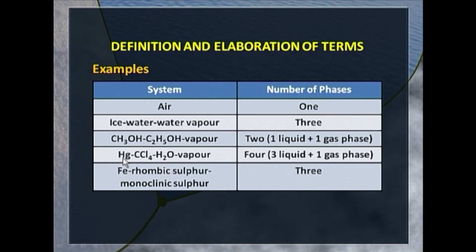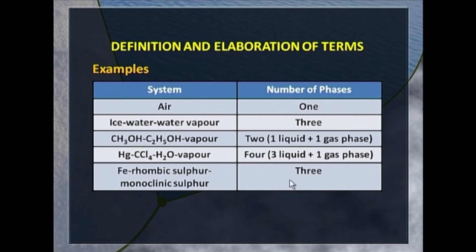In a system consisting of mercury, carbon tetrachloride, water and vapour, there will be four phases — three liquid phases plus one gas phase — because mercury, carbon tetrachloride and water are completely immiscible. If I have a system consisting of rhombic sulphur, iron and monoclinic sulphur, there will be three phases, because the allotropes of sulphur constitute separate phases.